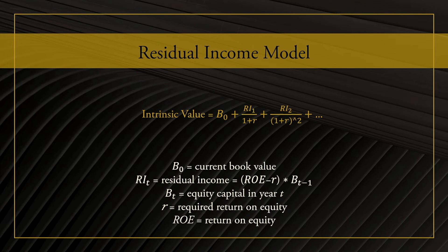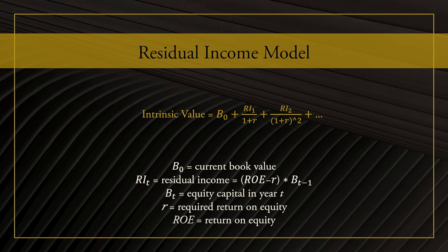Let's now look at the residual income valuation model. The main drivers are book value and return on equity. The intrinsic value is computed by taking the book value and adding the present value of all future residual income — that is, the net profit a company has minus the dollar value of the cost of having equity in the company. This model primarily applies to companies with significant equity. One serious shortcoming is that if the required return on equity consistently exceeds the actual return on equity, the intrinsic value of the stock can turn negative.